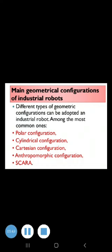Now the next part is robot configuration. There are two categories of robot configuration: A) body and arm configuration, and B) wrist configuration. Body and arm configuration includes polar configuration, cylindrical configuration, cartesian configuration, jointed arm configuration, and SCARA configuration.